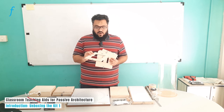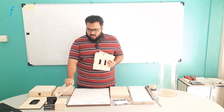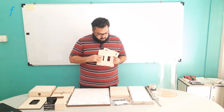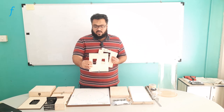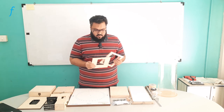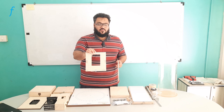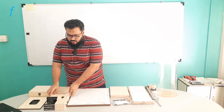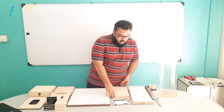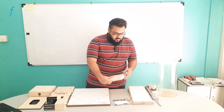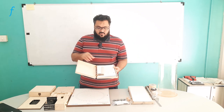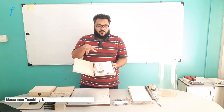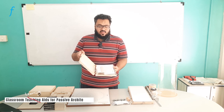For the scaled house, we have made different walls with different window-to-wall ratios. These are the configurations — this is one configuration, this is another, this is another, this is one configuration, and this is the last configuration. We also have papers that will be representing wall facades, which we will see in the experiments.